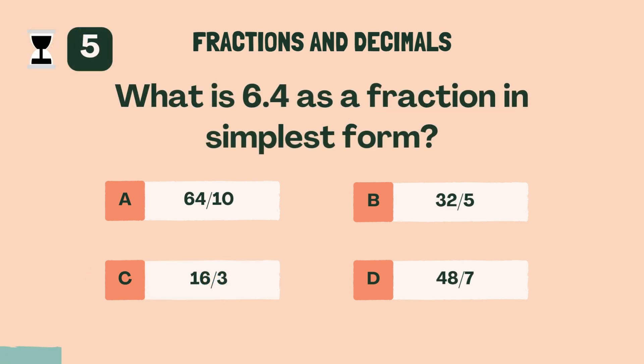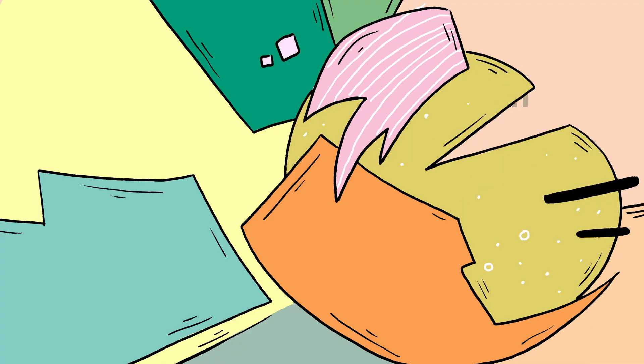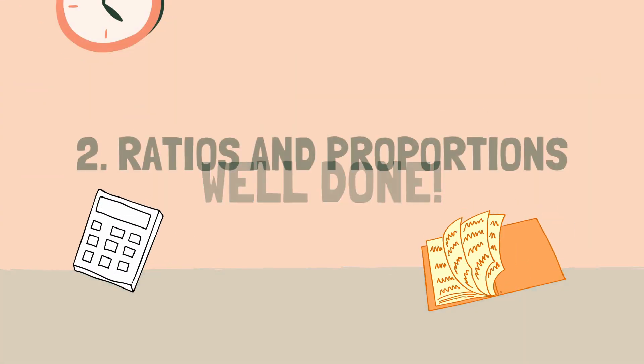What is 6.4 as a fraction in simplest form? B, 32 fifths. Well done. Let's move on to the next category.